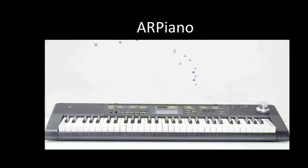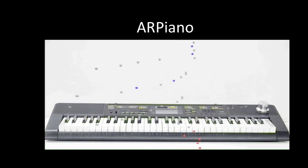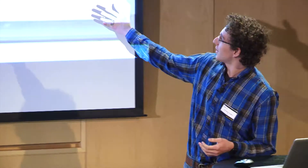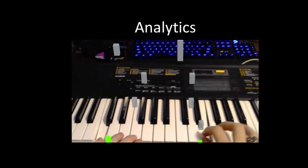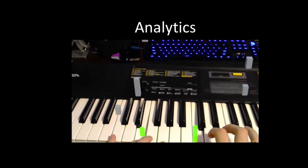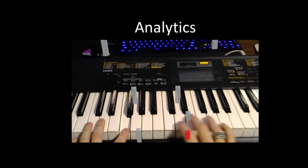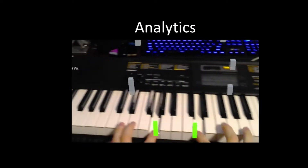AR Piano takes that same piano roll that you saw before and places it right in your keyboard, so you know exactly what key to press, at what time, and for how long, even if you've never read sheet music before. This is a rendition of Für Elise in this GIF, and it's a pretty complicated one. But here I'm using it to play Twinkle Twinkle Little Star. As you can see, I get feedback when I'm playing, and if I mess up, it'll turn red.